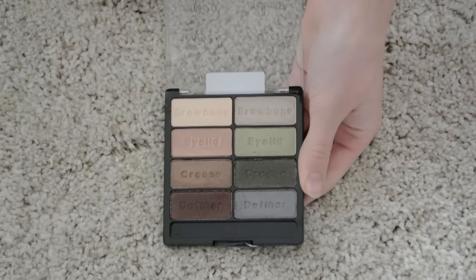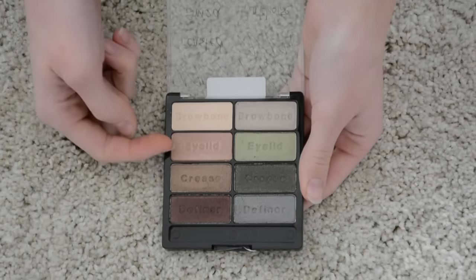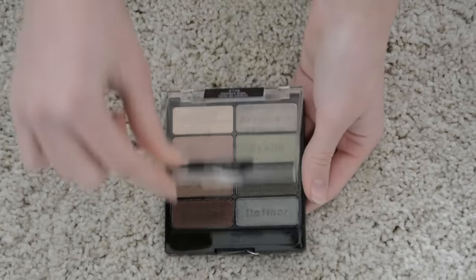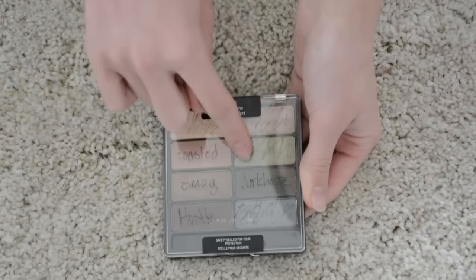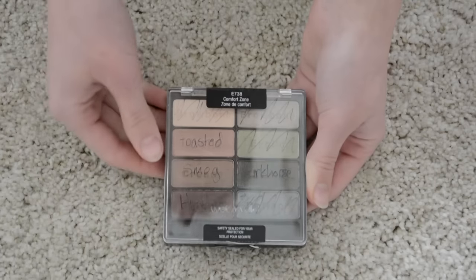So the first palette we're going to be using is Comfort Zone. We have eight eyeshadows in here, but we're only going to be using four that are a really nice duplicate. Then the others, we are not going to be using the eyeshadow itself, but we're going to be using the pan of it. So I also wrote the names that I'm going to be using and scribbled the ones through that I won't be using.